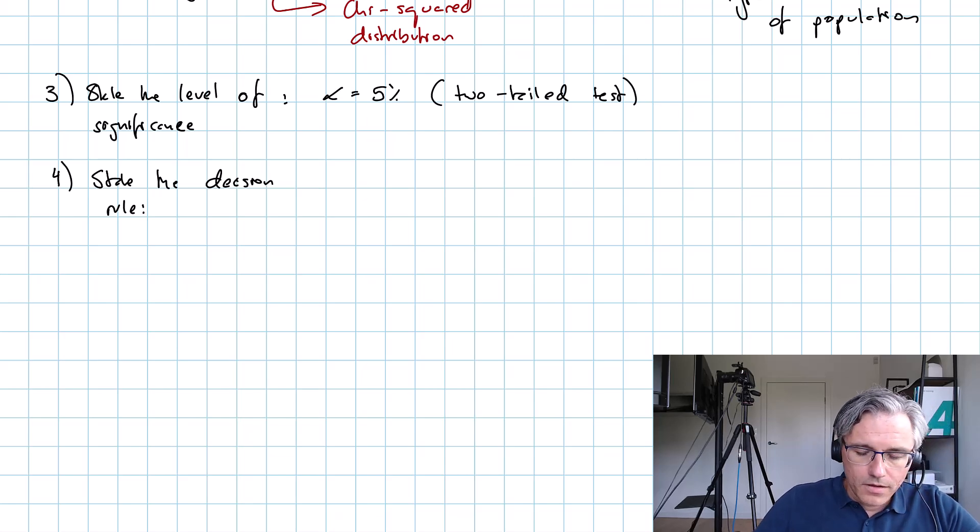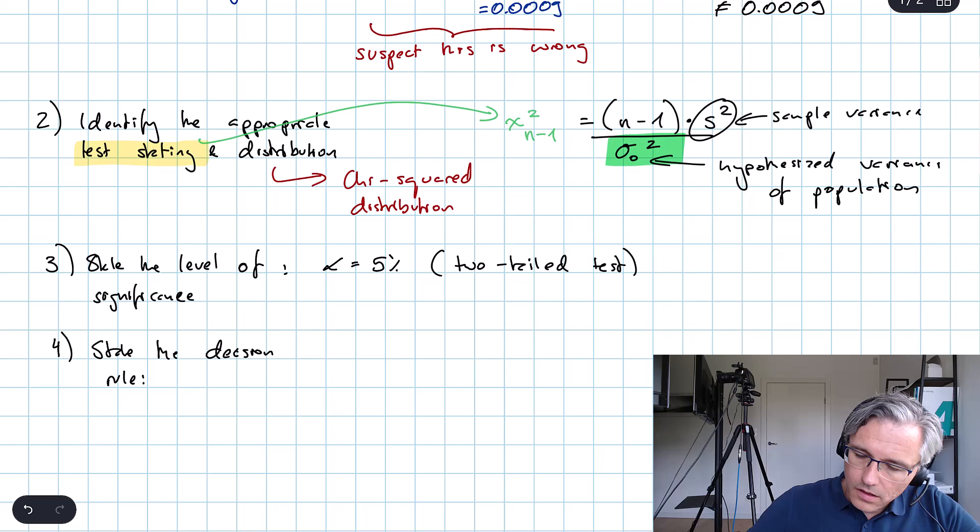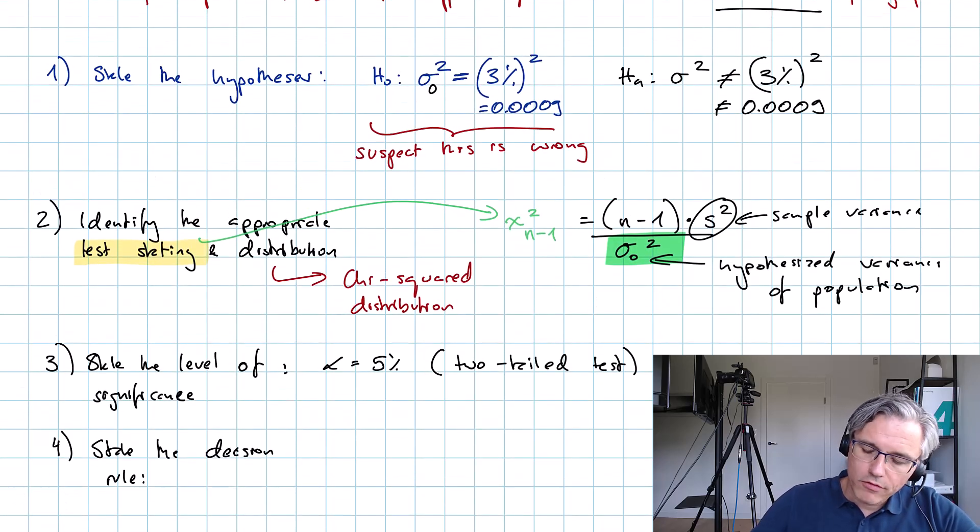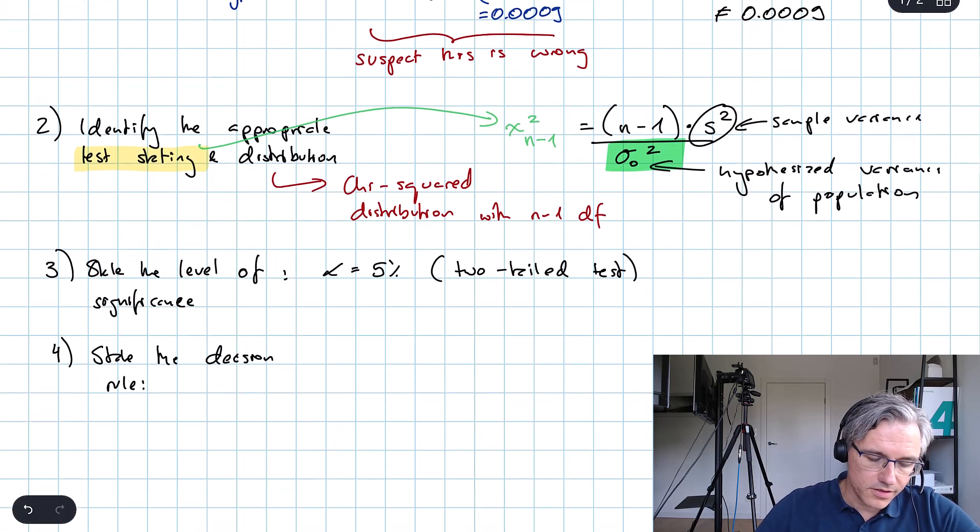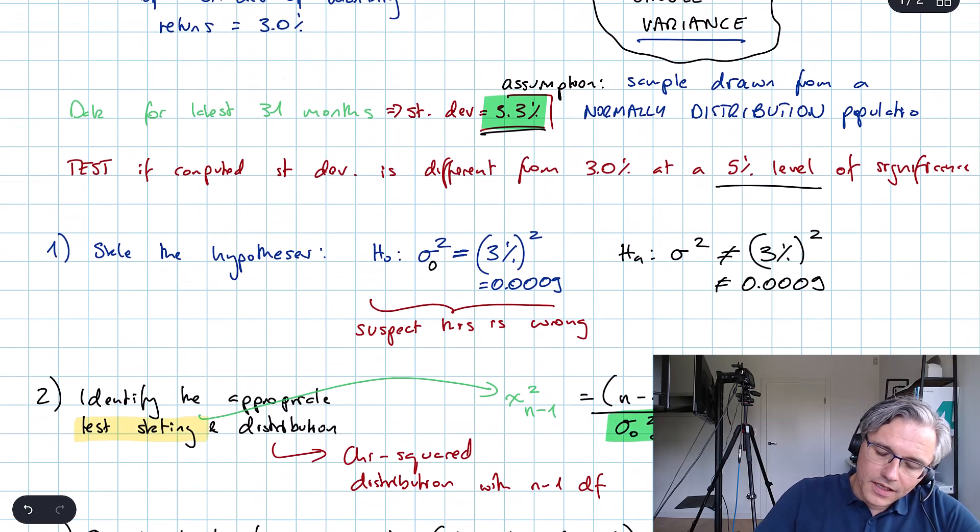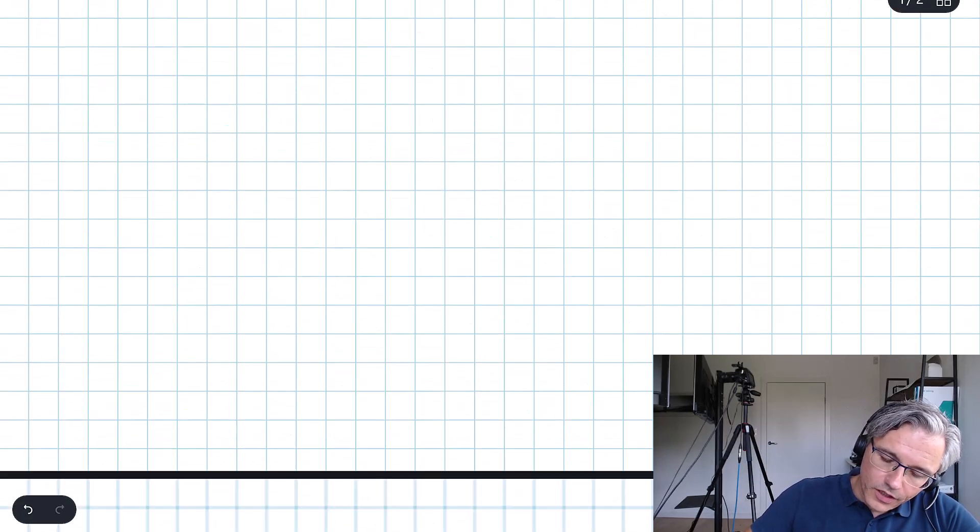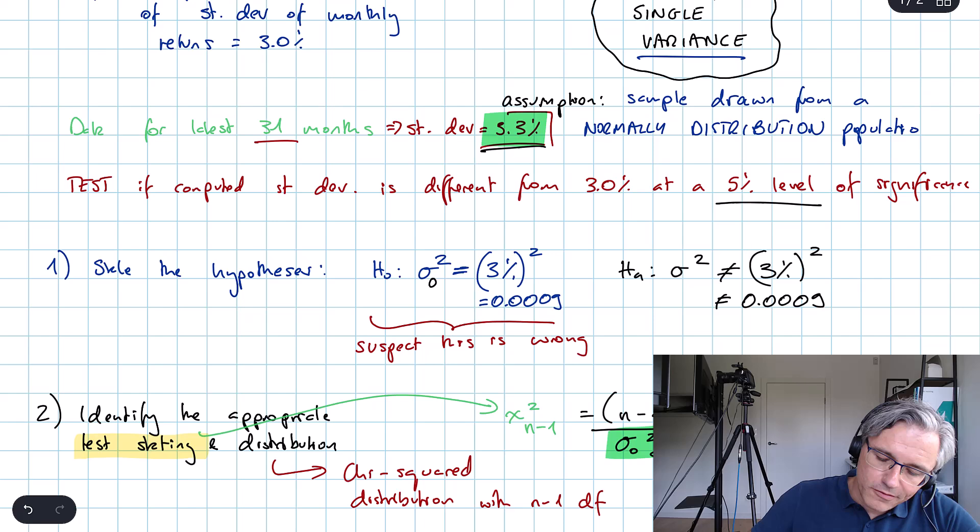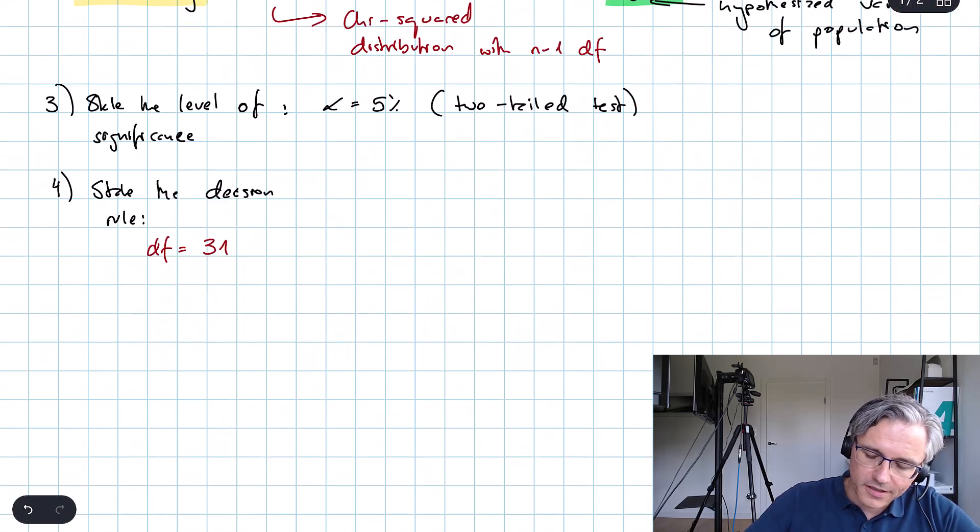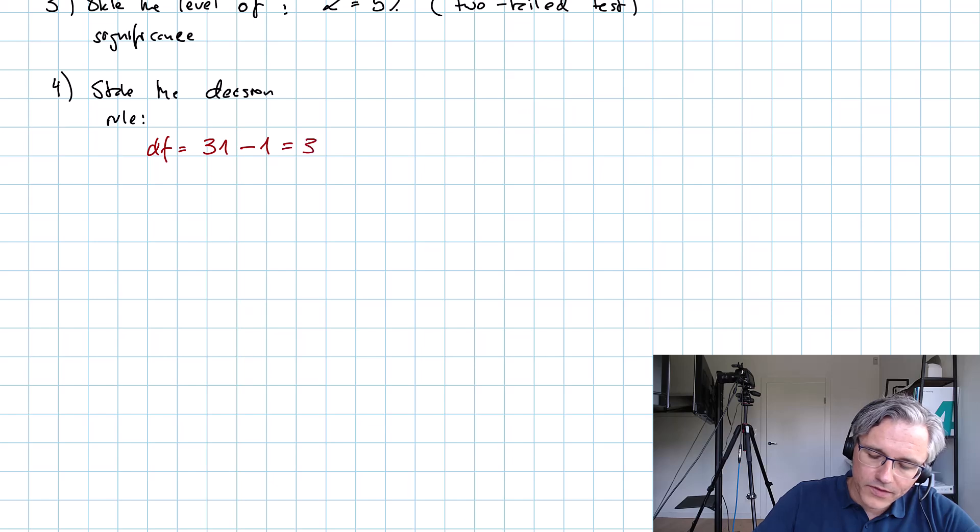The next thing is to state the decision rule. We would be utilizing the chi-squared distribution with n minus 1 degrees of freedom. n is 31, so degrees of freedom is 30. And what I've got is a separate sheet with the chi-squared distribution statistical tables.